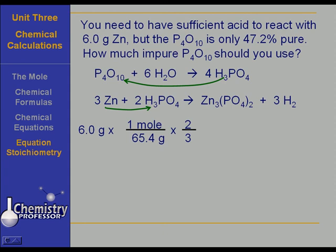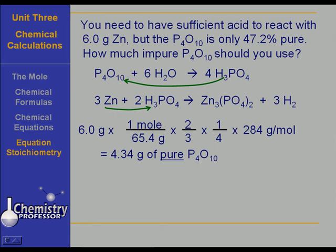Now we are at moles of phosphoric acid. We can go to moles of P4O10, and we see that it is 1 mole of P4O10 that will produce 4 moles of phosphoric acid. Now we are at moles of P4O10, and we can find the mass of the P4O10 used by multiplying by the gram molecular weight of 284 grams per mole. This gives us 4.34 grams of pure P4O10.